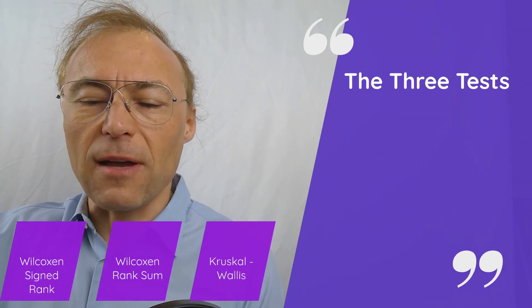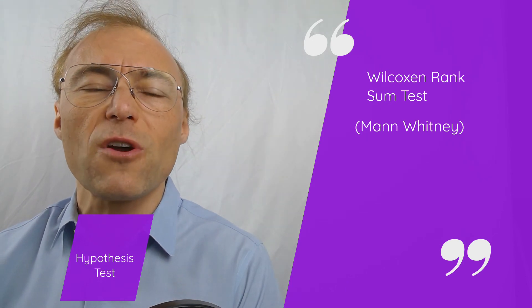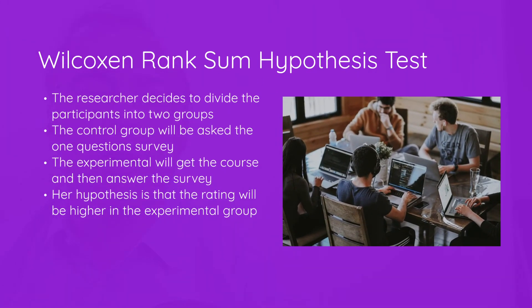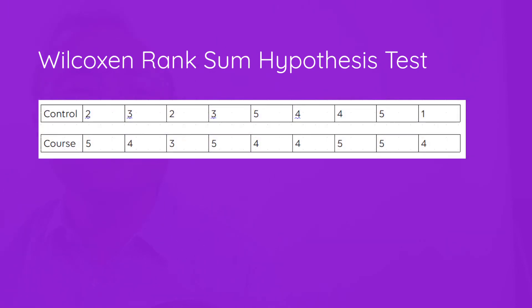Next, we'll look at the Wilcoxon Rank Sum Test, also known as the Mann-Whitney Test — one of the most commonly used non-parametric methods. Another way the researcher could set up her study is to divide participants into two groups: a control group that completes the one-question survey, and an experimental group that completes the course and then the survey. Her hypothesis is that the rating will be higher in the experimental group — a very common design for educational studies.